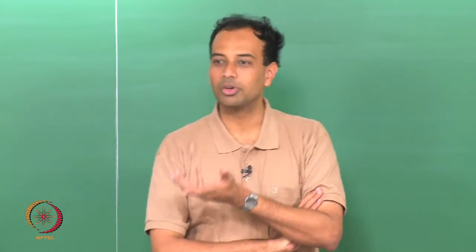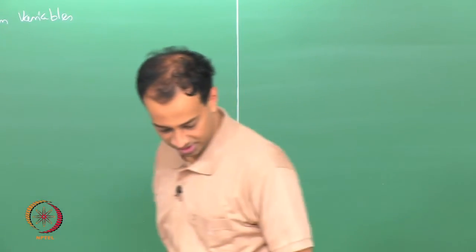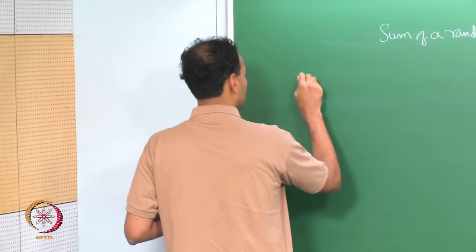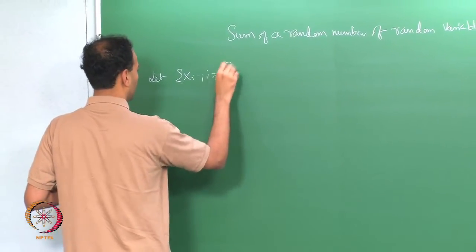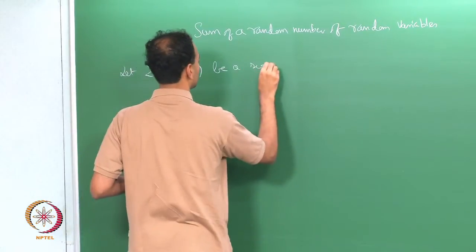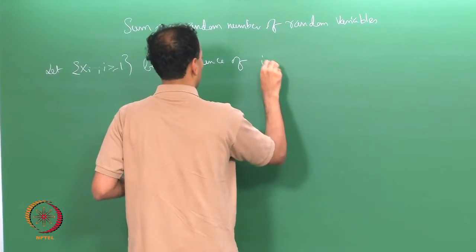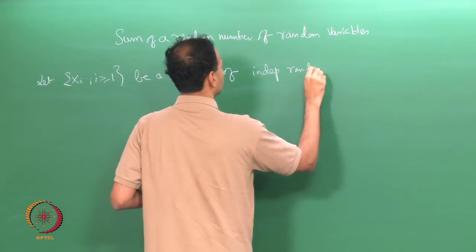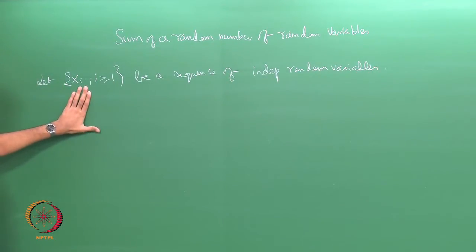You are not summing a fixed small n number of random variables, but the number of terms you are summing is itself a positive integer valued random variable. Let x_i, for i greater than or equal to 1, be a sequence of independent random variables. We will only consider the case when these x_i are independent; the dependent case is more complicated.